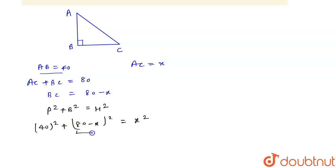Here we will use formula a minus b square is equal to a squared plus b squared minus 2ab to open this. So it will become 1600 plus 6400 plus x squared minus 2 into 80 into x equal to x squared.